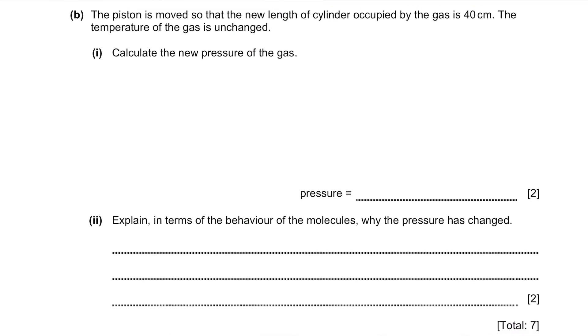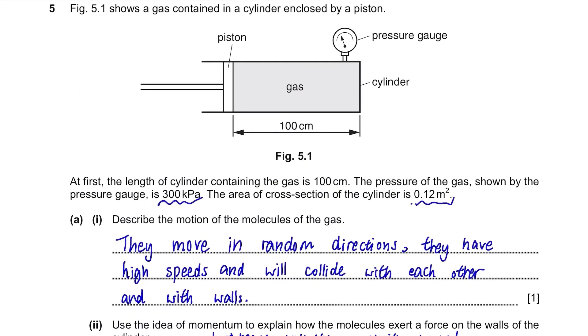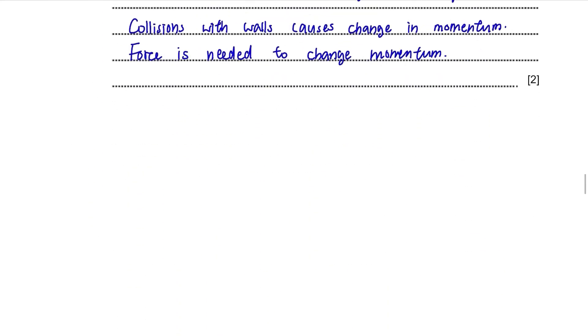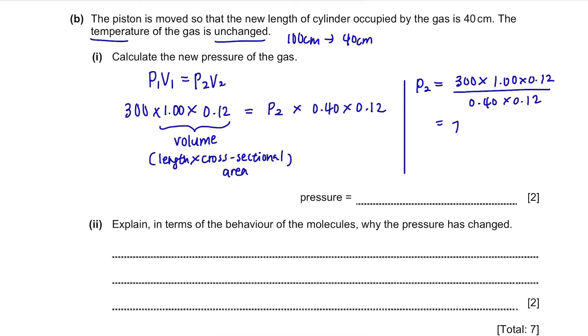Part B. The piston is moved so that the new length of cylinder occupied by the gas is 40 cm. The temperature of the gas is unchanged. Calculate the new pressure of the gas. Originally, the length was 100 cm and now it's 40 cm. The initial pressure and the area of cross-section are given in the question. So, we need to use the formula P1V1 equals P2V2 meaning as long as the temperature is constant, the product of pressure and volume will remain constant. So, it's 300 times 100 times 0.12 equals P2 the unknown times 0.40 times 0.12. We want to find P2 so the calculation goes like this. And the answer is 750 kPa.